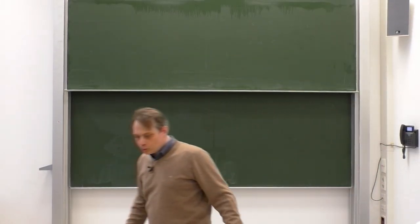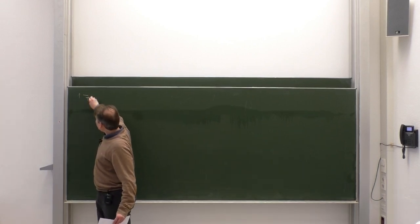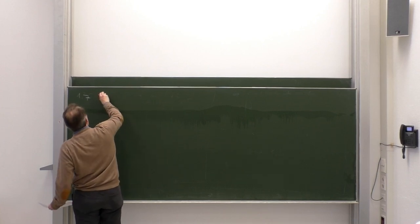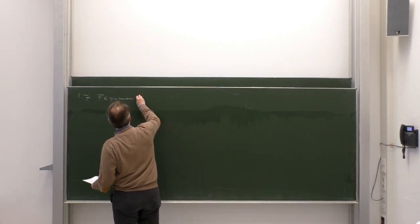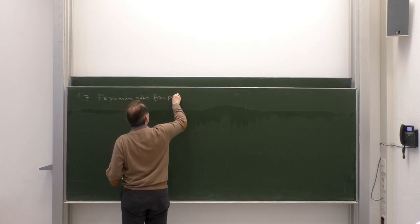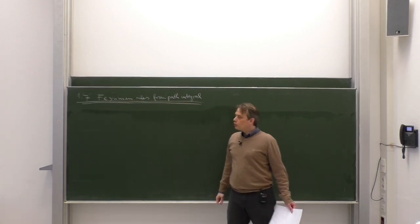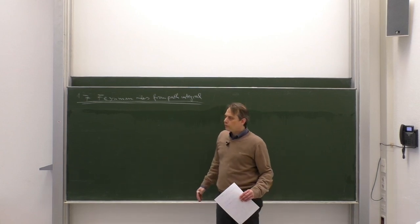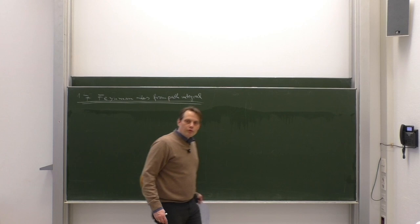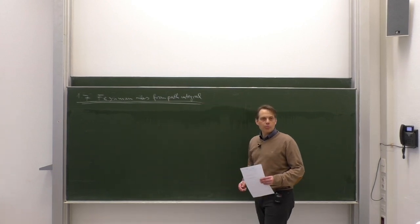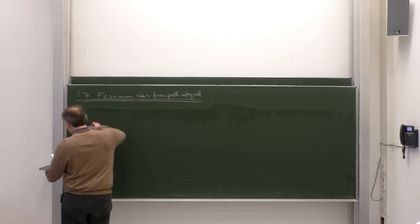We begin and continue with quantum field theory 2. We are now at section 1.7 on the path integral quantization of quantum field theory. Today we will discuss Feynman rules as derived from the path integral. This provides an answer to some comments from quantum field theory 1. Using the path integral formalism, we will derive the Feynman rules in a very simple and straightforward way. The derivation looks even simpler than using the operator formalism.